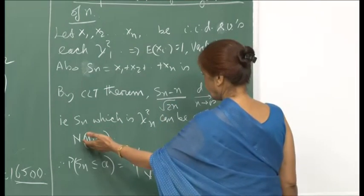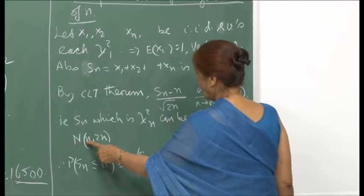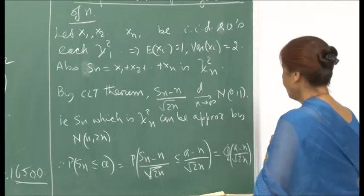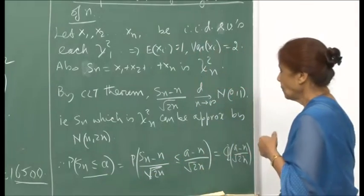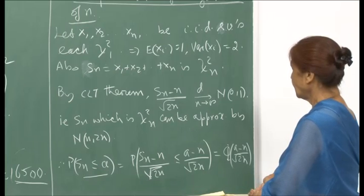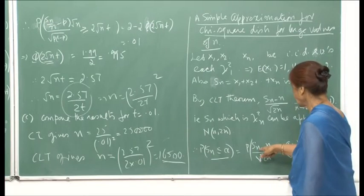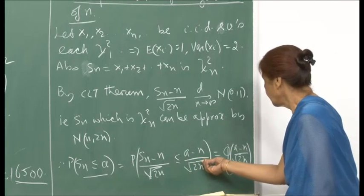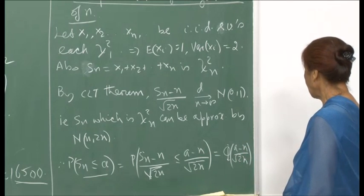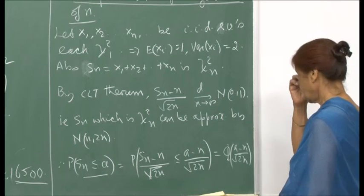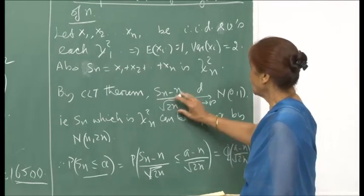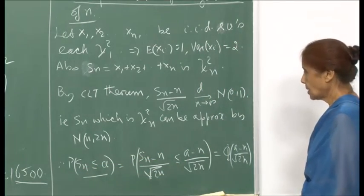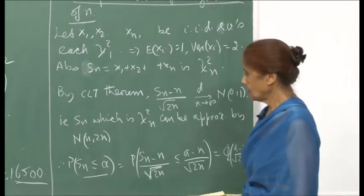So for large n, to compute P(chi-square(n) <= a), we standardize: P((S_n - n)/sqrt(2n) <= (a-n)/sqrt(2n)) ≈ phi((a-n)/sqrt(2n)). For large n, the CLT gives a good approximation, so we can compute chi-square(n) probabilities using the standard normal table. The standard normal tables already computed by others can be used for these calculations when n is large.